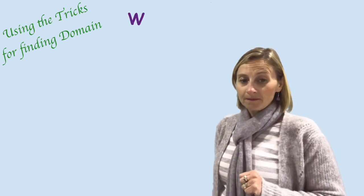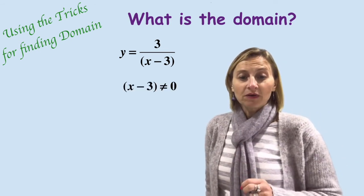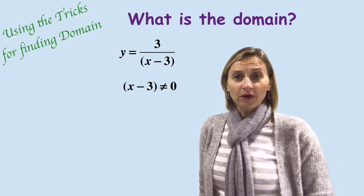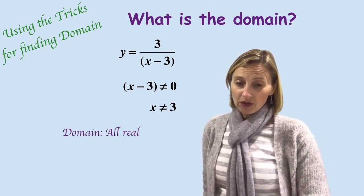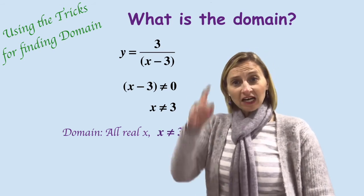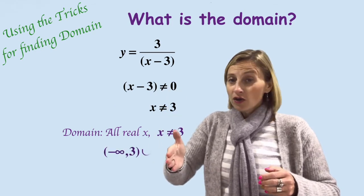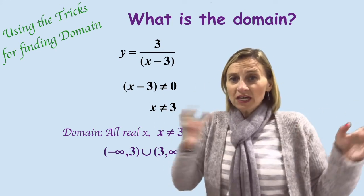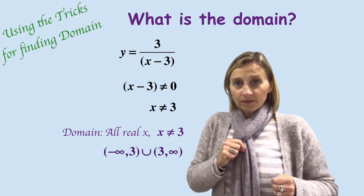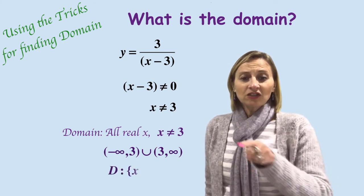Let's have a quick look at some of those in practice — we're only finding the domain. Let's say we have y equals 3 over x minus 3. We know this is a fraction and the denominator can never equal 0. So for the domain, x minus 3 can't equal 0, and then you just solve it: x can't equal 3. And that's the domain. But we have to remember to write it in set notation and interval notation. In interval notation, x can't equal 3 but it can be everything else: from minus infinity to 3, union 3 to infinity, with round brackets. And in set notation: D such that x such that x can't equal 3.